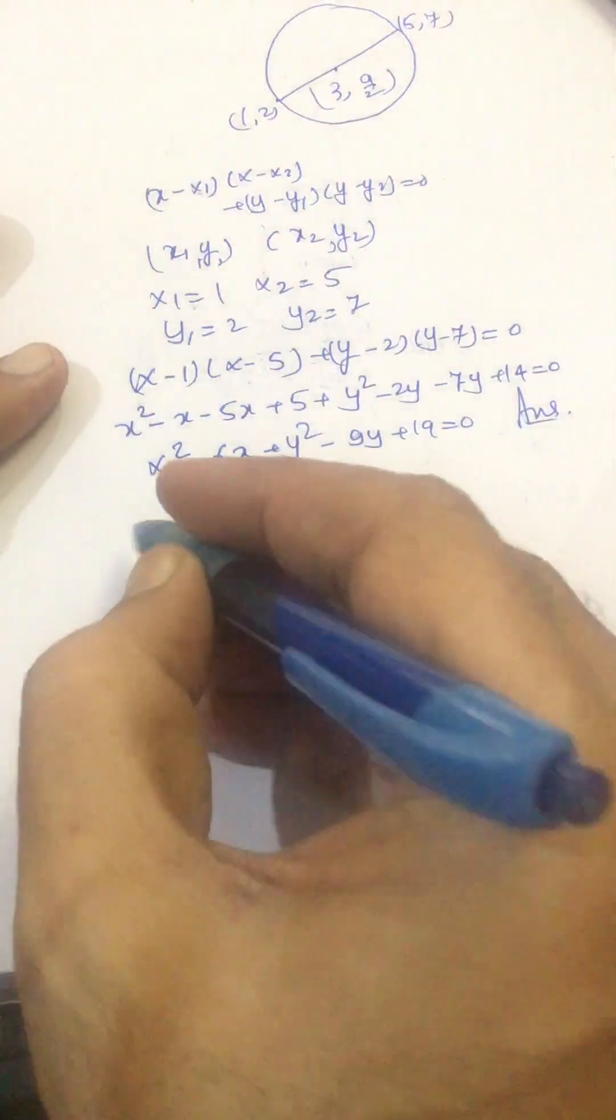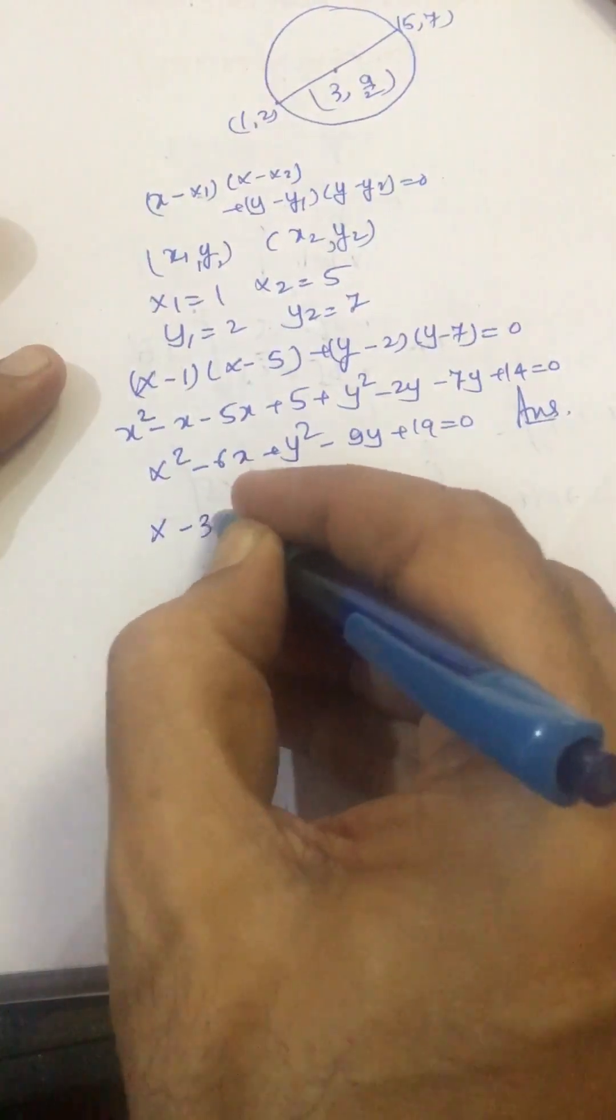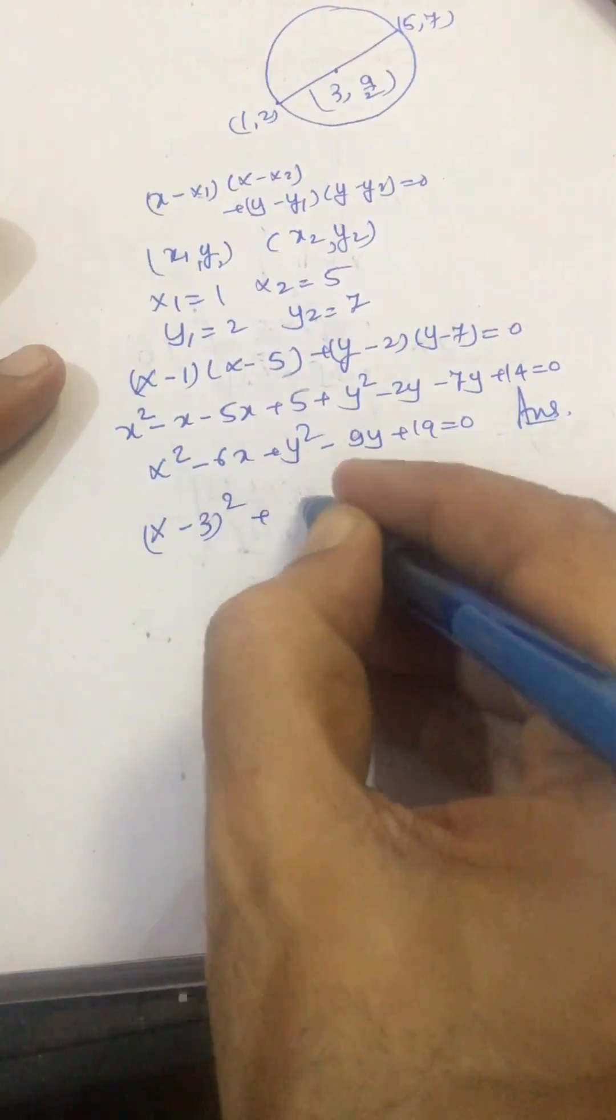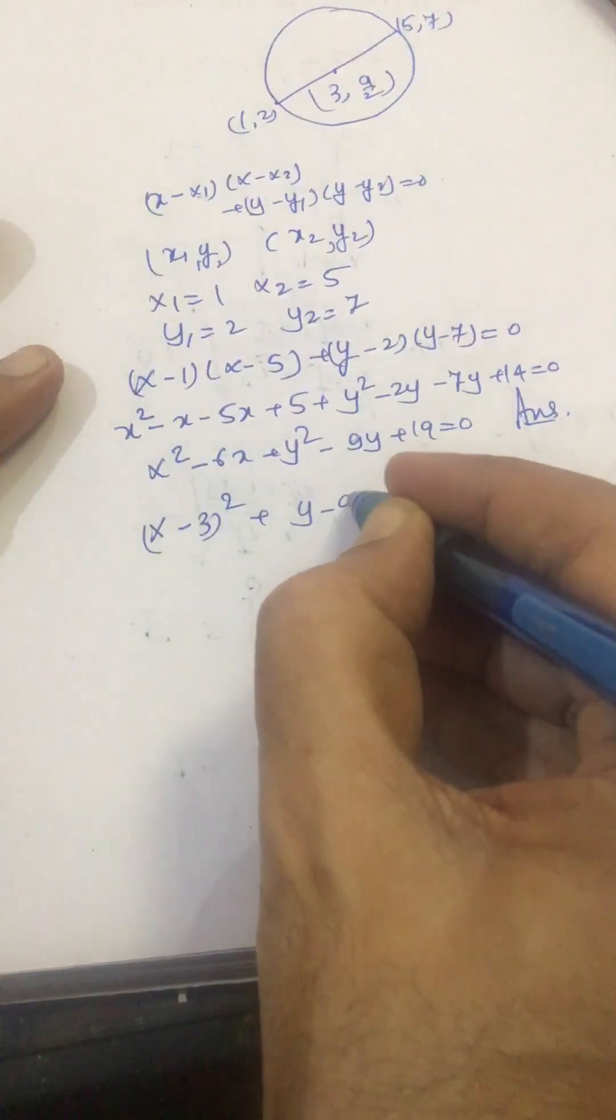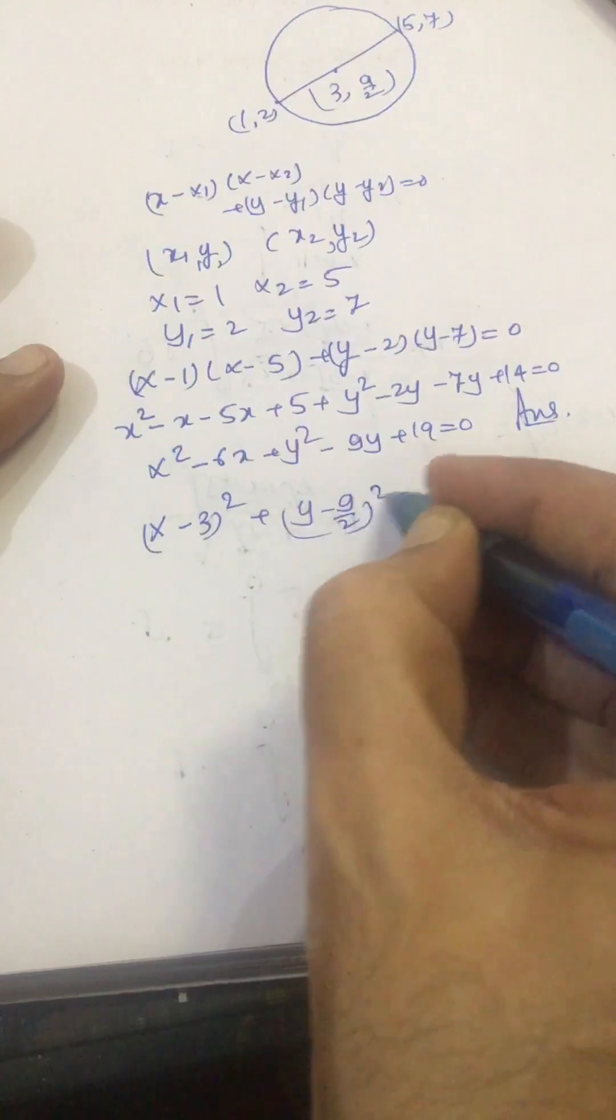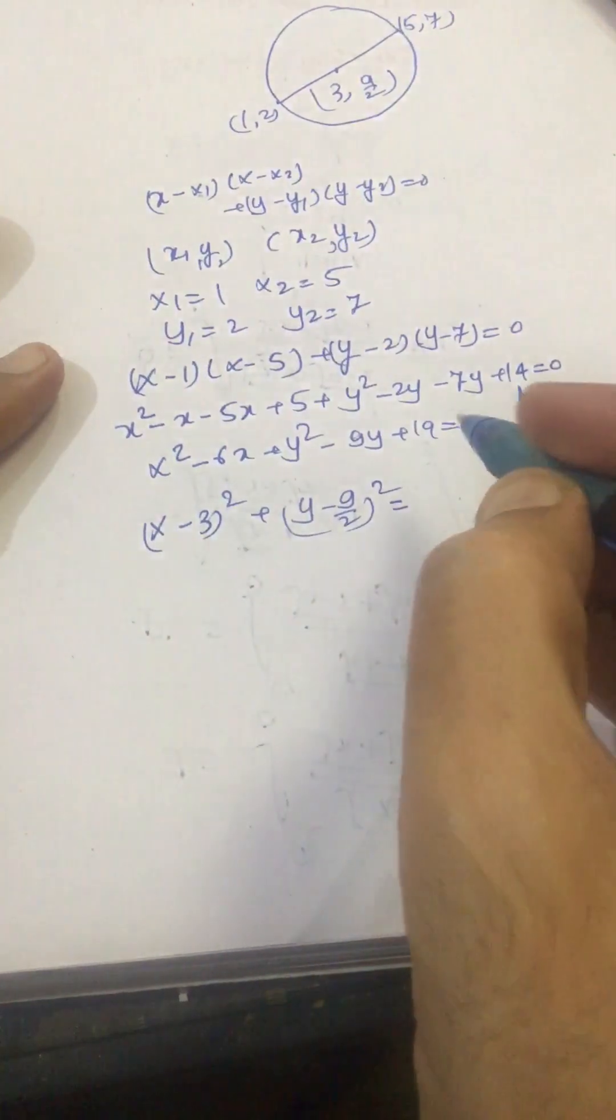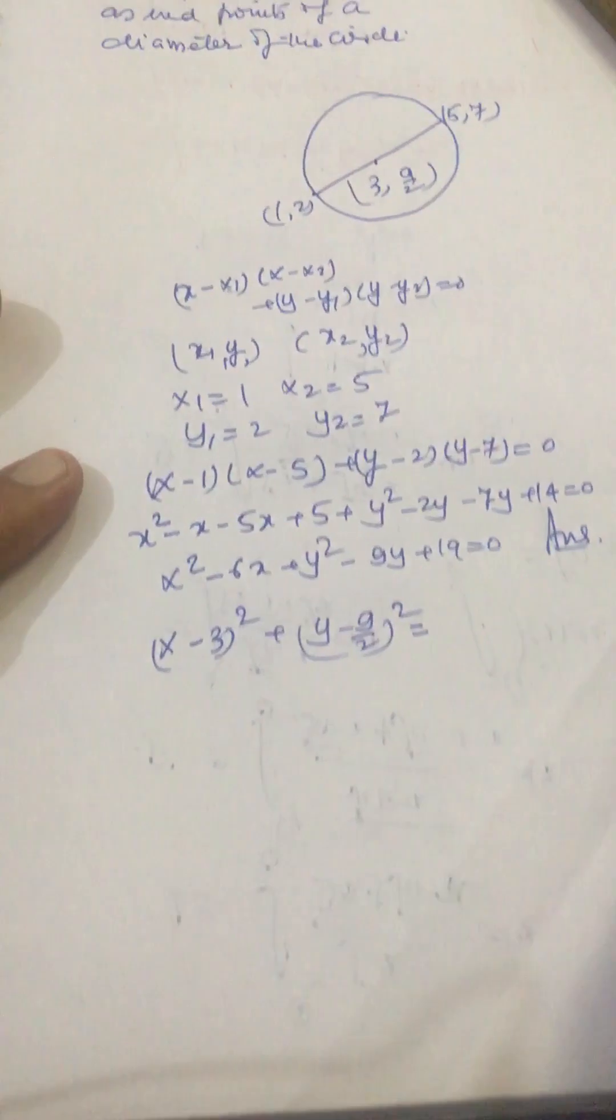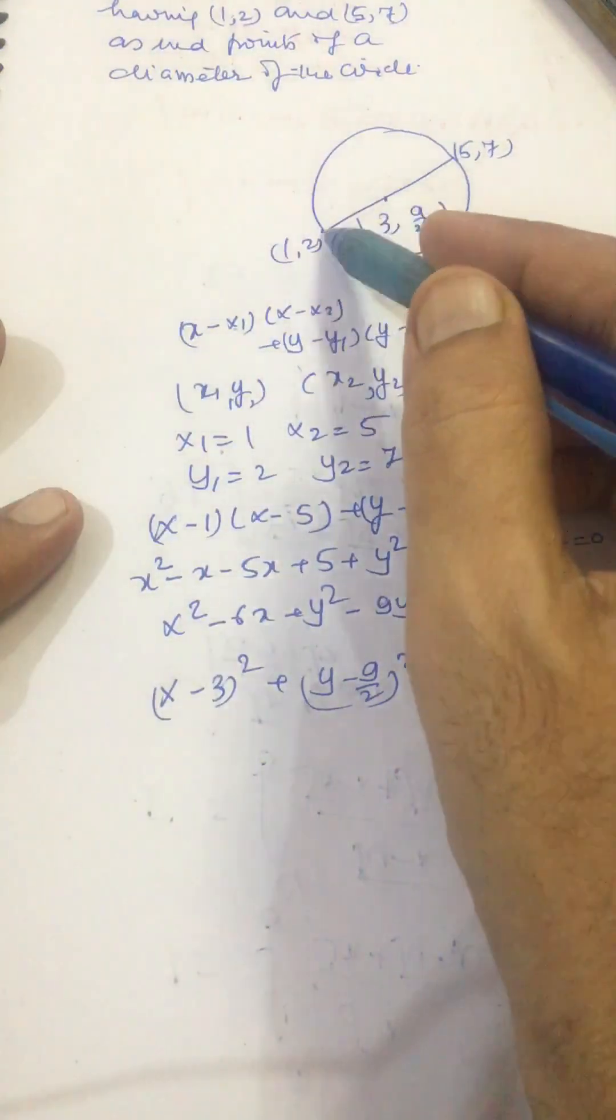This circle equation can be written as (x - 3)² + (y - 9/2)² = r², this is the radius.